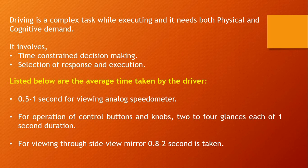Listed below are the average times taken by the driver for various tasks. It takes around 0.5 to 1 second for viewing the analog speedometer. For operation of control buttons and knobs, two to four glances each of one second duration are taken. For viewing through the side mirror, approximately 0.8 to 2 seconds are taken. During all these cases, the driver will be off sight of the road.